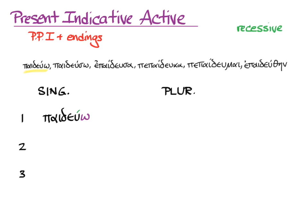So we get παιδεύω, I educate. In the second person singular, stem, ending, acute: παιδεύεις, you educate. Third person singular, παιδεύει. She educates, he educates, it educates.